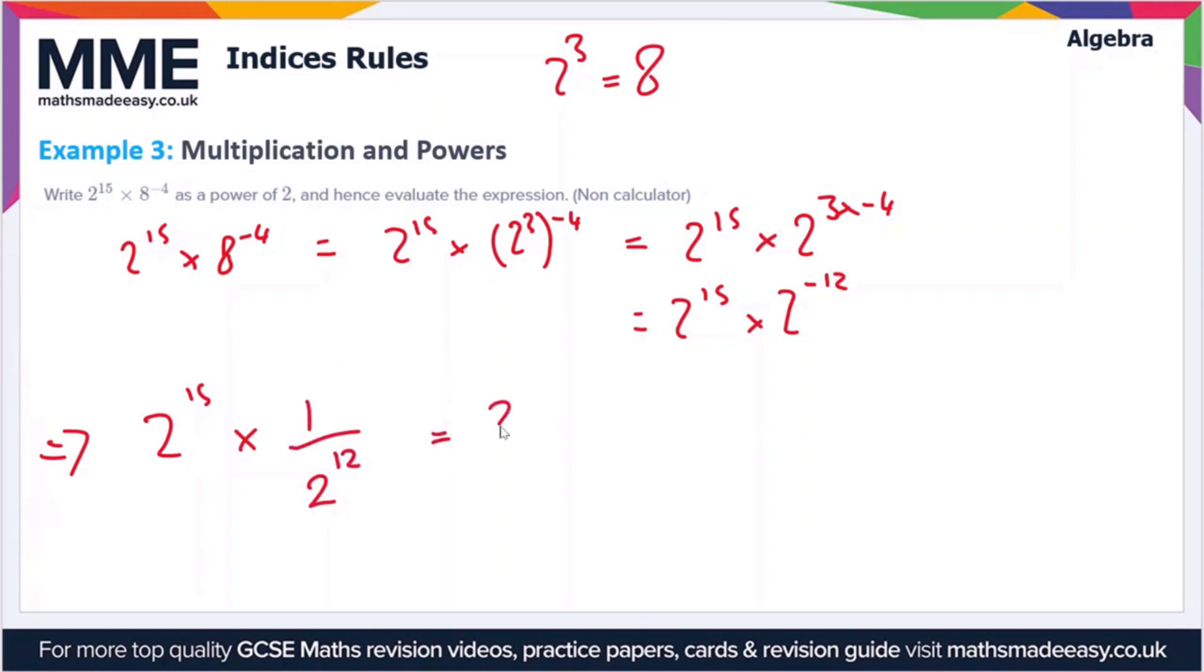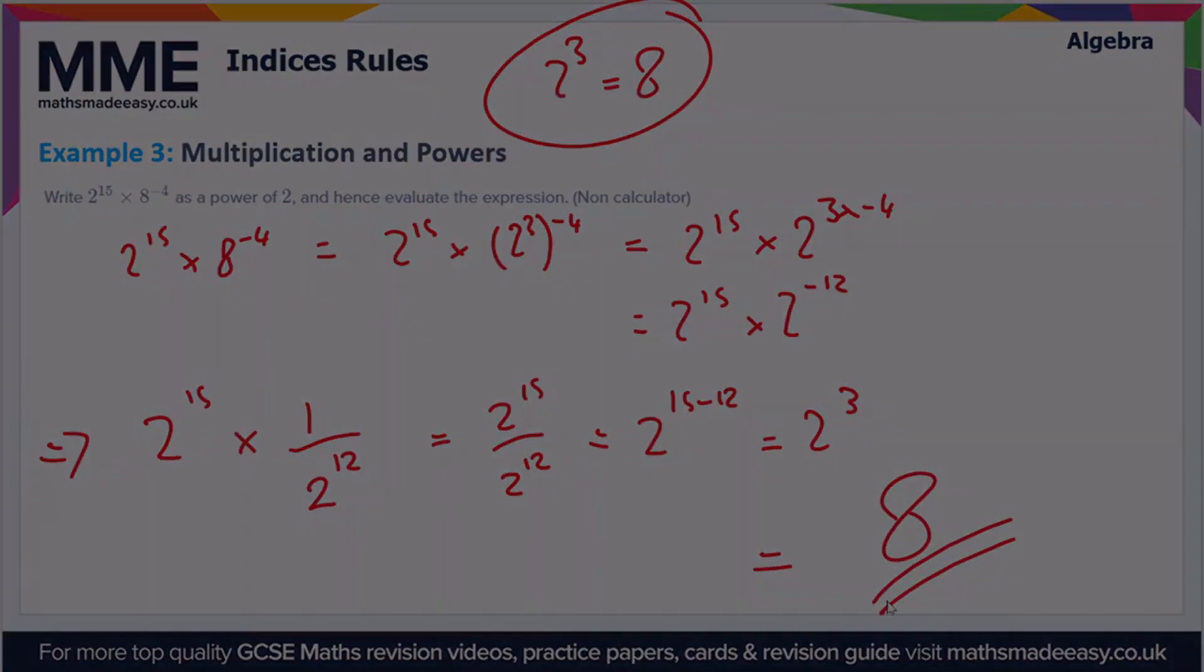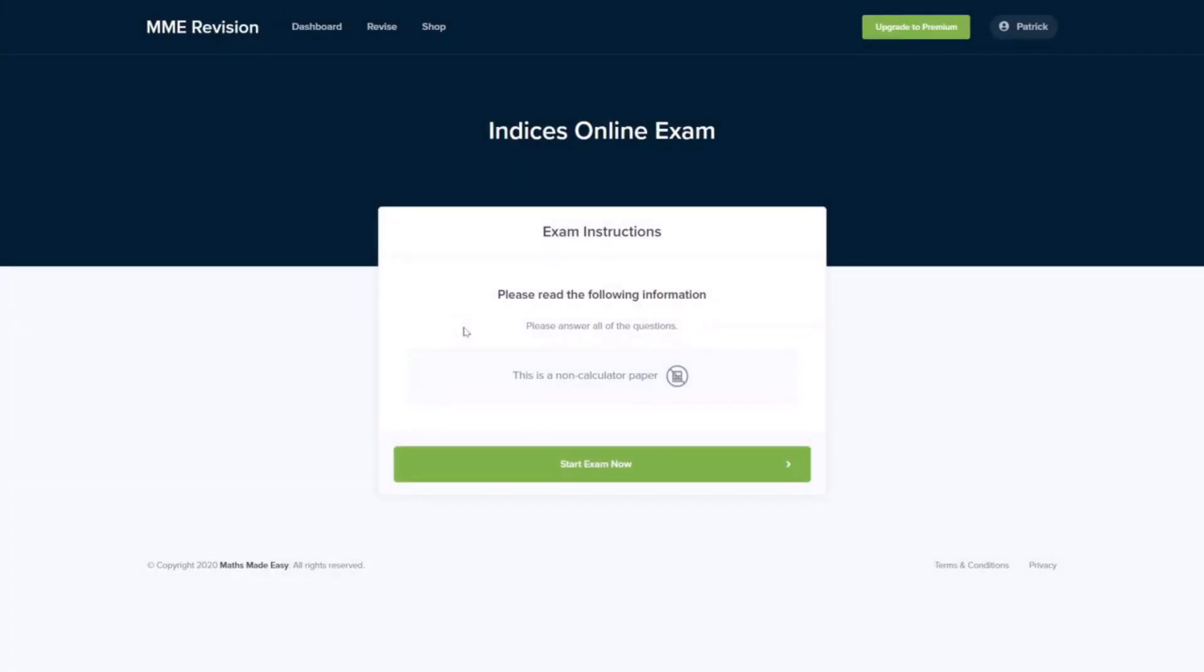And now we can write this fraction as 2 to the 15 over 2 to the 12, so all I've done there is just simplified the expression a bit. Now we can use the division rule, so this is equal to 2 to the 15 divided by 2 to the 12, so this becomes 2 to the 15 minus 12, which is 2 cubed. And as we said before, 2 cubed is 8, so our expression is equal to 8.